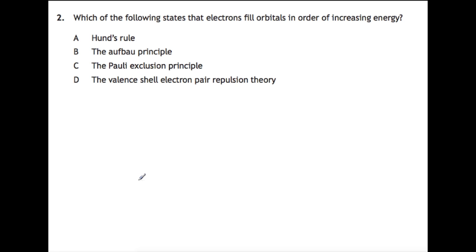Let's look now at question 2: which of the following states that electrons will fill orbitals in order of increasing energy? Hund's rule says electrons will fill singly with parallel spins into degenerate orbitals before they start pairing up. The Aufbau principle, which is the answer—Aufbau is German for building up. The Pauli exclusion principle is where electrons are pairing and their spins must be opposite. VSEPR theory is used to work out the shape of a molecule.